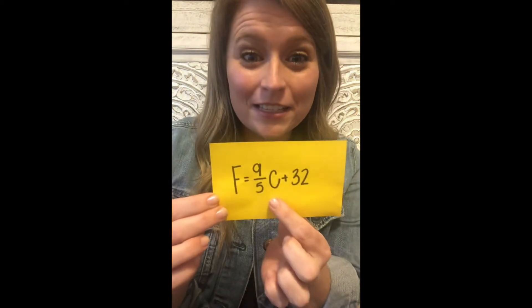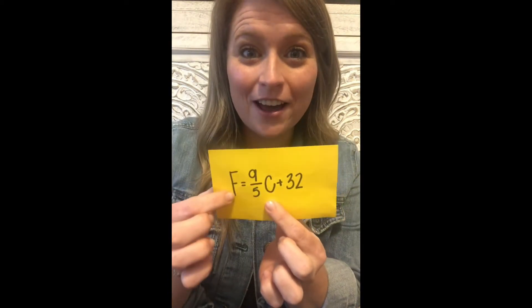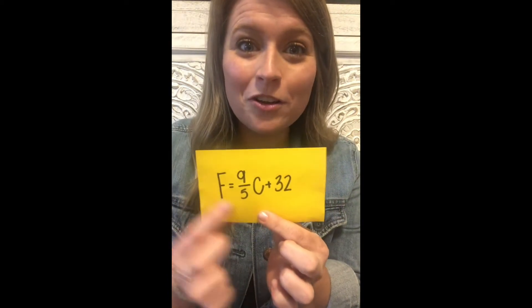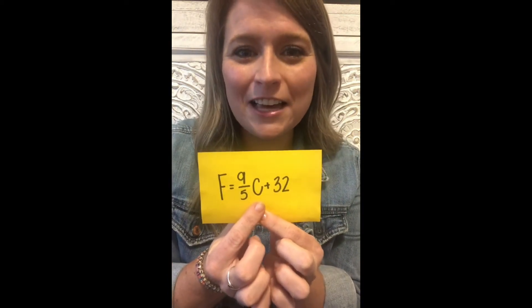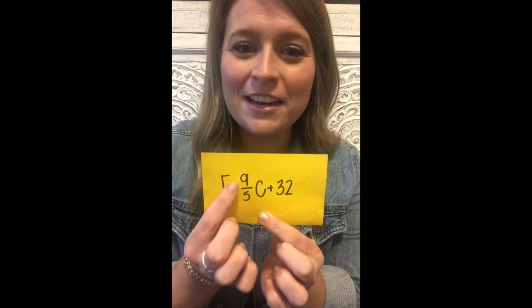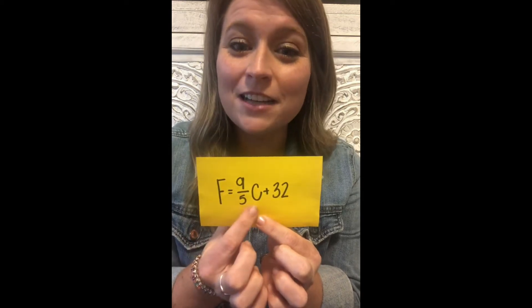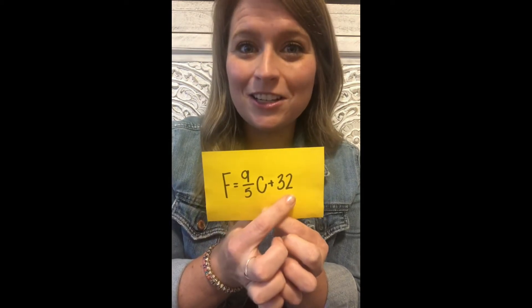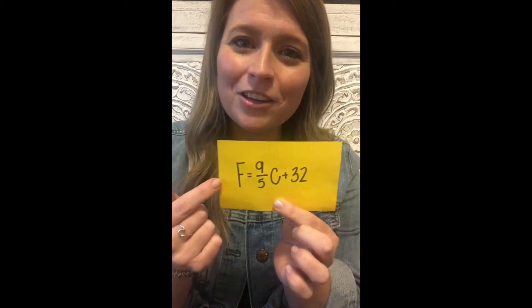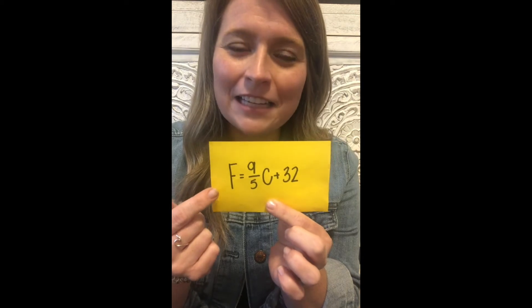Let's look at the first one: going from Celsius to Fahrenheit. When you know Celsius, you plug it in for C and you multiply 9 fifths times C, plus 32. That'll give you Fahrenheit.